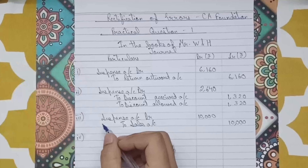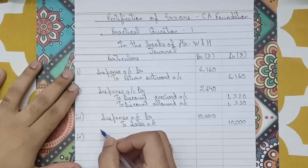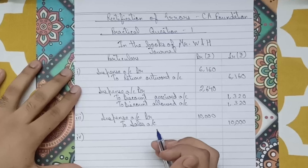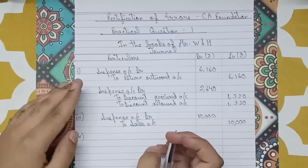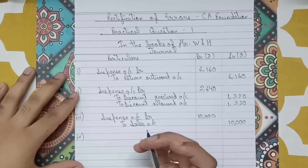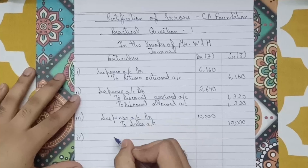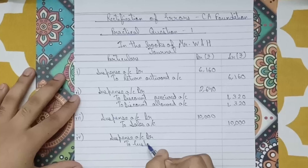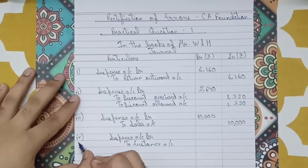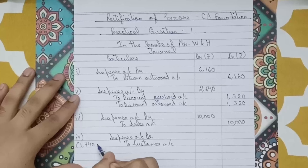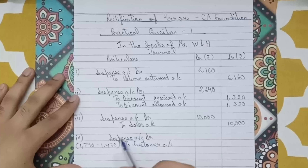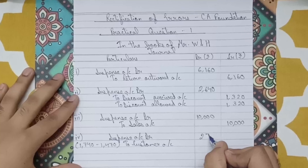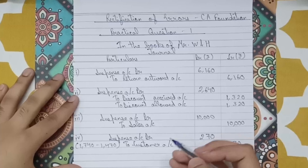Point four: A credit sale of 1,470 had been debited to a customer account at 1,740. There is a difference in the amount — we should have recorded 1,470 but recorded 1,740 instead. The excess amount needs to be reversed. So the journal entry is: Suspense Account debit to Customer Account — the difference being 1,740 minus 1,470, which equals 270.